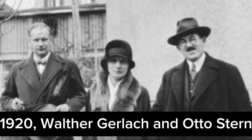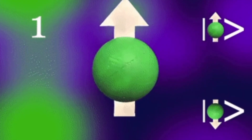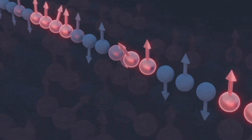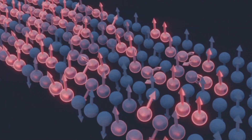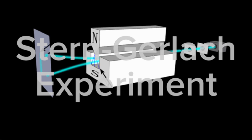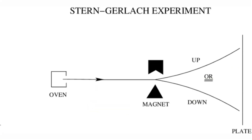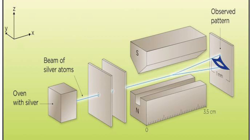In 1920, Otto Stern and Walter Gerlach designed an experiment that unintentionally led to the discovery that electrons have their own individual continuous spin, even as they move along their orbital of an atom, which is now known as the Stern-Gerlach experiment. The experiment was done by putting a silver foil in an oven to vaporize its atoms. The silver atoms were then collected into a beam that passed through an inhomogeneous magnetic field. The result was that the magnetic field split the beam into two separate ones.